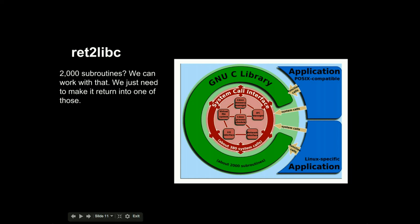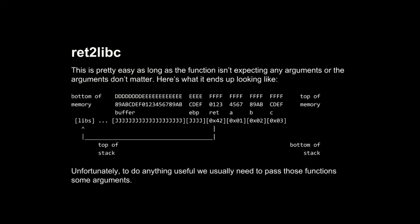The idea of the return-to-libc attack is you set your instruction pointer — your return address — to point into one of the libraries that's loaded. Once you do that, it'll start executing wherever you point it to, basically acting like a function call. Return-to-libc is really easy if the function you're calling doesn't expect any arguments. However, in order to do anything useful, you usually have to supply it with arguments.